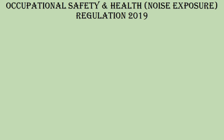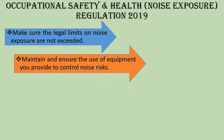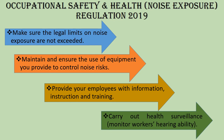The Occupational Safety and Health Noise Exposure Regulation 2019 provides laws and guidelines to be followed at all workplaces. In summary, employers must: make sure the legal limits on noise exposure are not exceeded; maintain and ensure the use of equipment provided to control noise risk; provide employees with information, instruction, and training; and carry out health surveillance to monitor workers' hearing ability monthly or periodically.